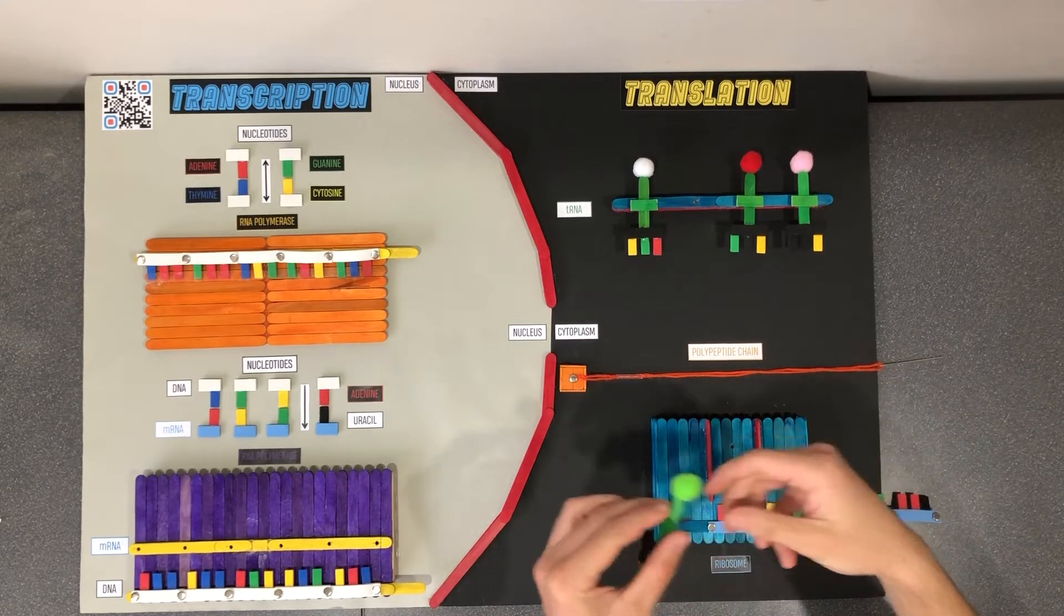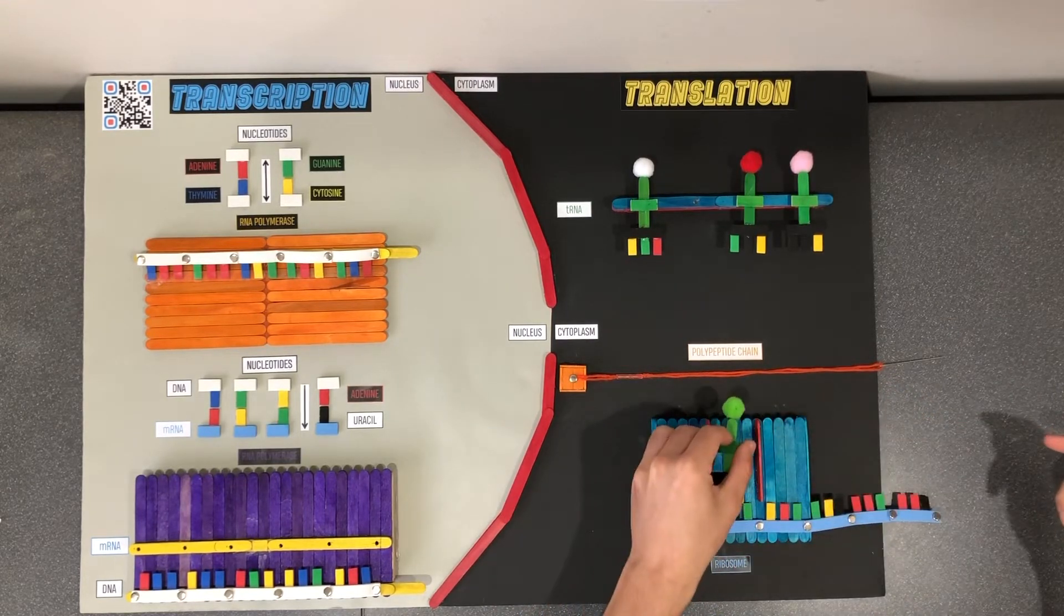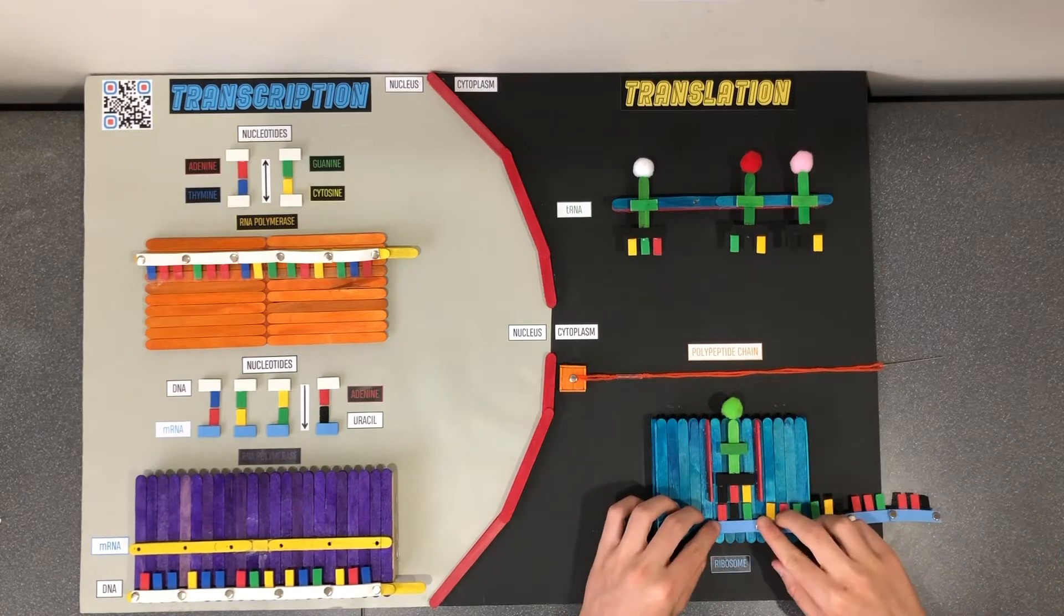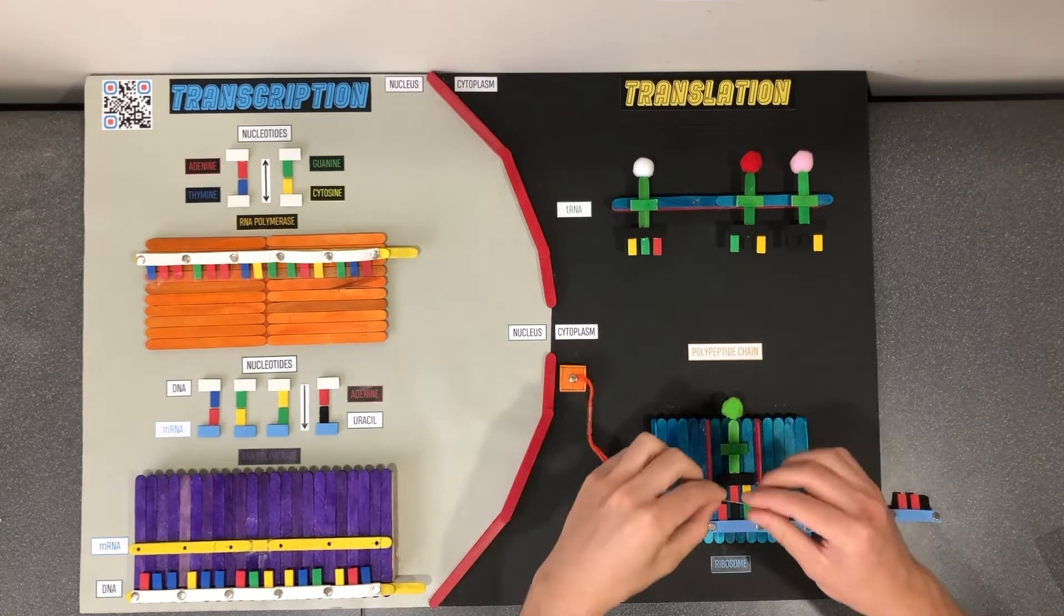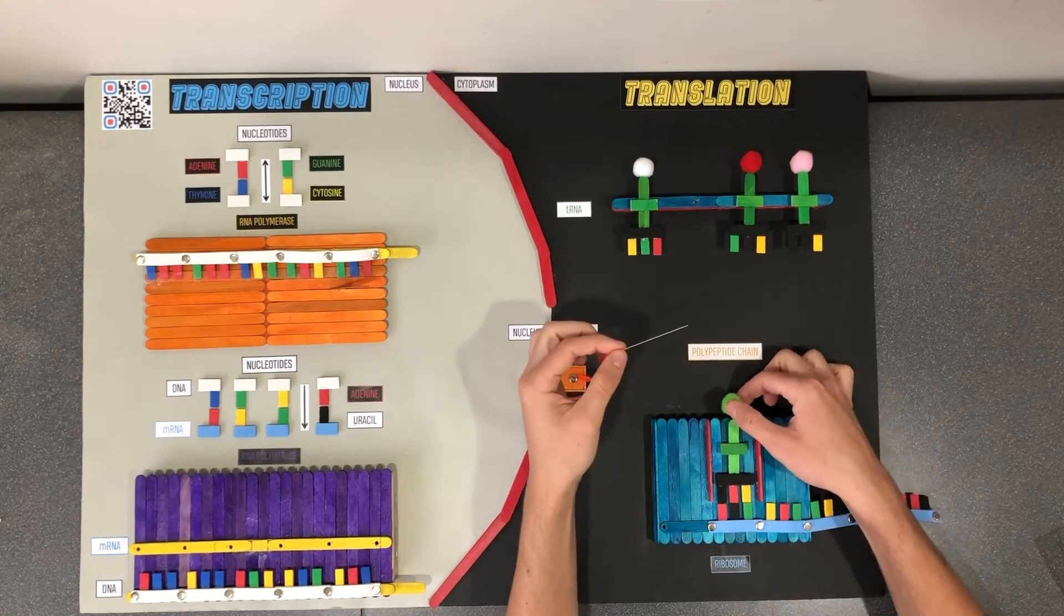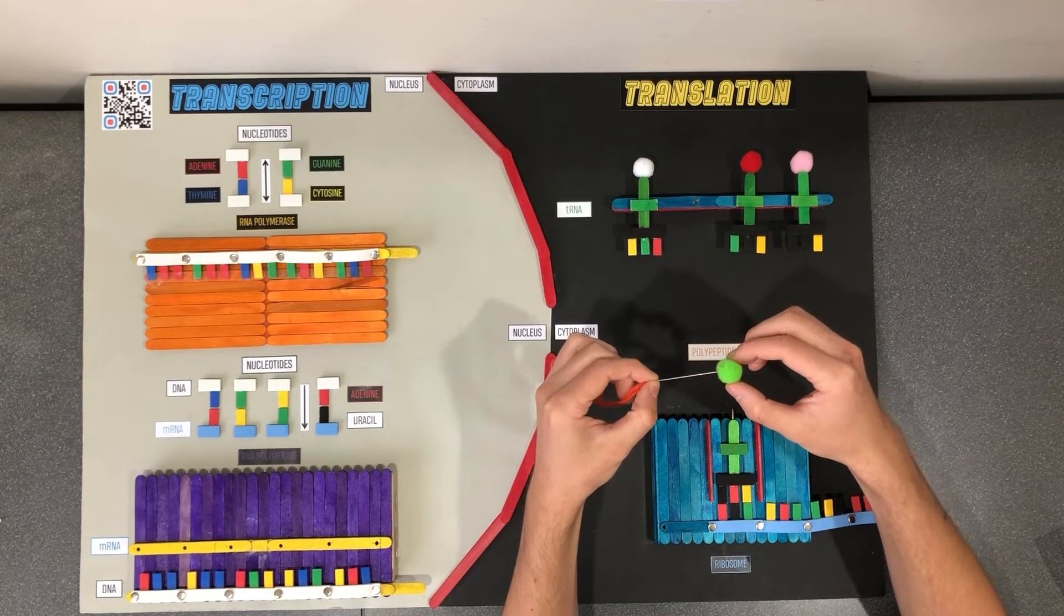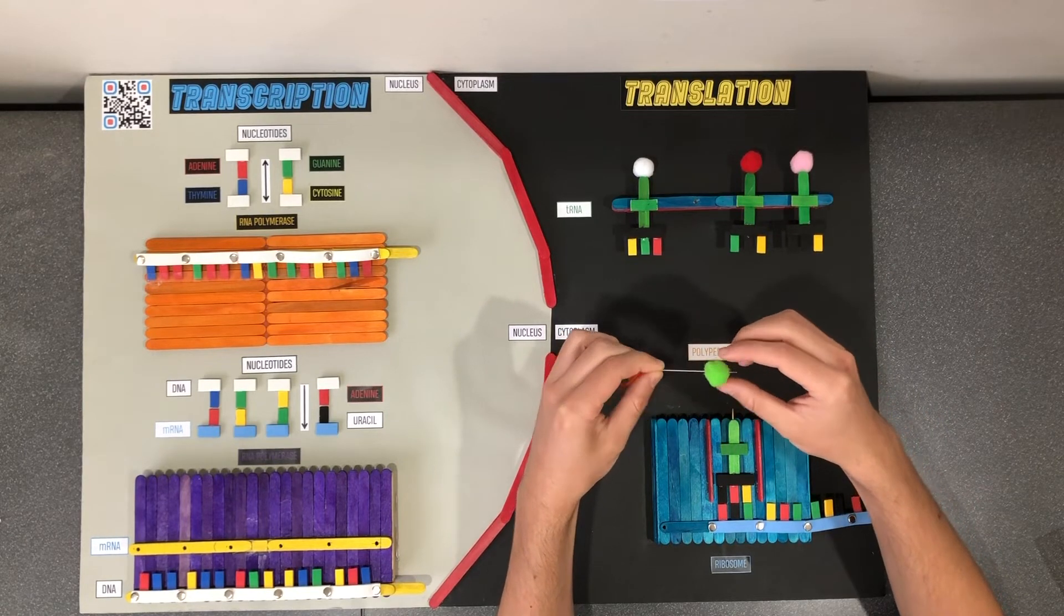Users will be instructed to determine the correct tRNA molecule by matching its anticodon to the complementary codon of mRNA. The tRNA molecule will be inserted into the ribosome like soap, and the attached pom-pom ball, indicative of an amino acid, will be threaded onto the string of wool above.